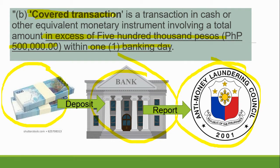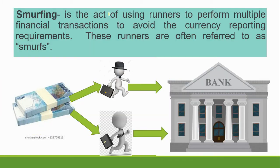We have what is called a covered transaction. A covered transaction is a transaction in cash or its equivalent involving a total amount exceeding 500,000 pesos (half a million) within one banking day. If you have 500,000 and deposit it to a bank, the bank will report it to the Anti-Money Laundering Council — because that is a covered transaction. Similarly, if you transfer 500,000 via remittance centers like Palawan or Cebuana, they will also report it to AMLC. And if you purchase casino chips worth 500,000, the casino will likewise report it to AMLC.